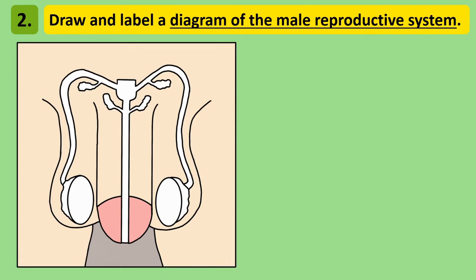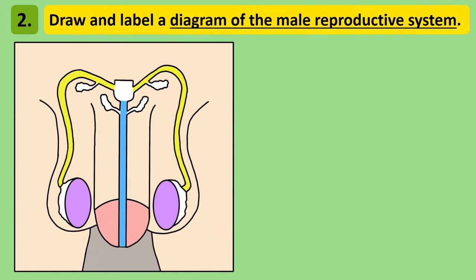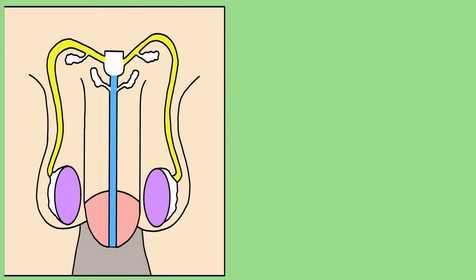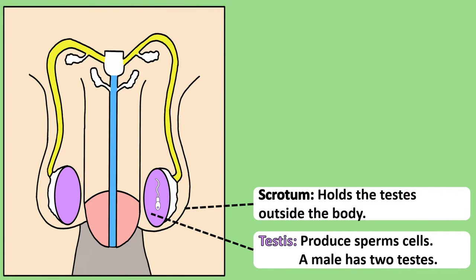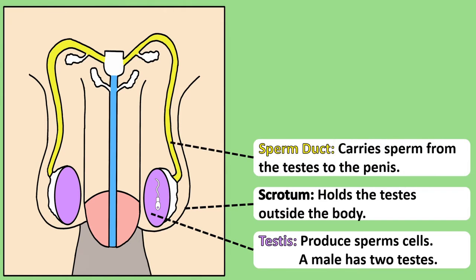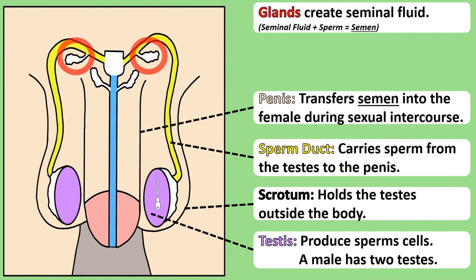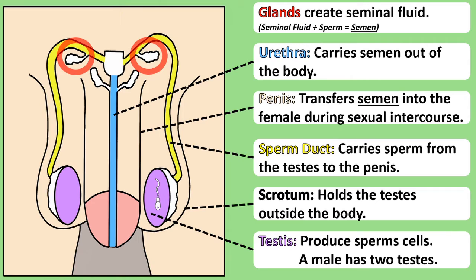This is a diagram of the male reproductive system. You need to be able to draw the diagram and add the following labels: the sperm duct, penis, urethra, scrotum and testis. The testis is where sperm cells are produced in a sexually mature male. Males have two testes and these are held in a sack of skin called the scrotum. Sperm move from the testes through the sperm duct towards the penis. Glands along the sperm duct create seminal fluid; together, the sperm-seminal fluid mix is called semen. The penis transfers semen into the female during sexual intercourse. The urethra is a tube that runs through the penis and carries semen from the sperm duct out of the penis.